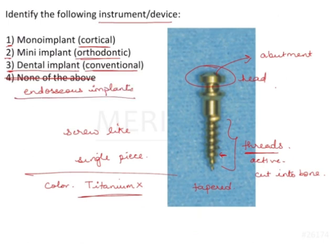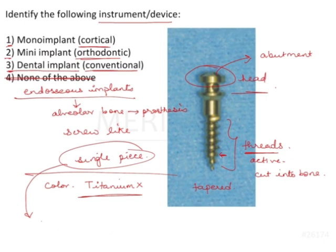Endosseous implants are the ones that go into the alveolar bone and support a prosthesis. Here, as we can see, there is no place for a prosthesis, but there are single piece endosseous implants used for overdentures, so this could be one of them. However, it is not made up of titanium, so it is not a conventional implant — conventional endosseous implants can be zirconia, other ceramics, or titanium. So we can eliminate this option.